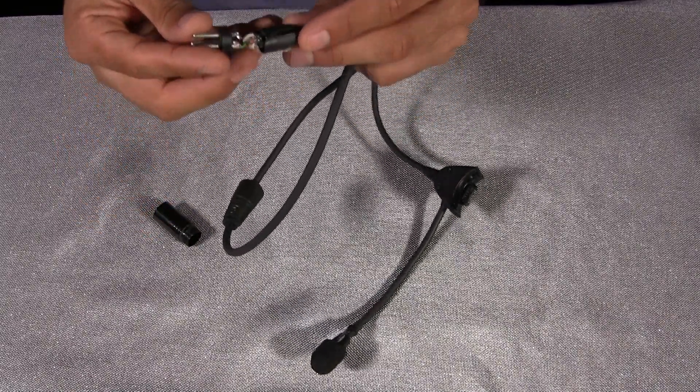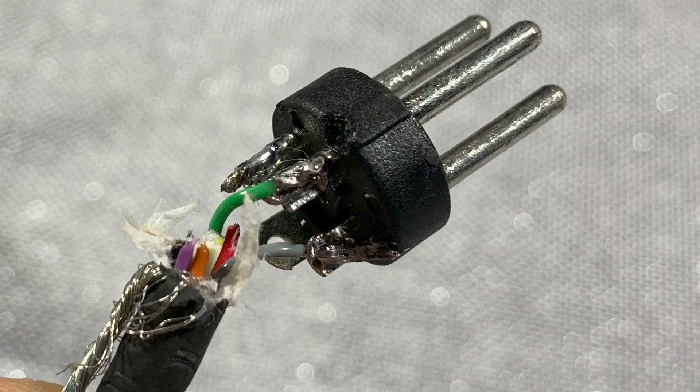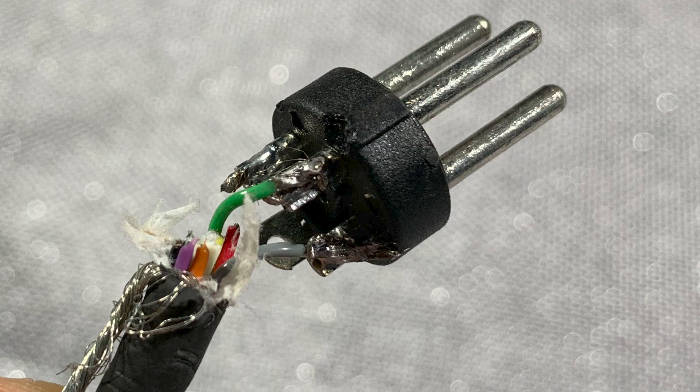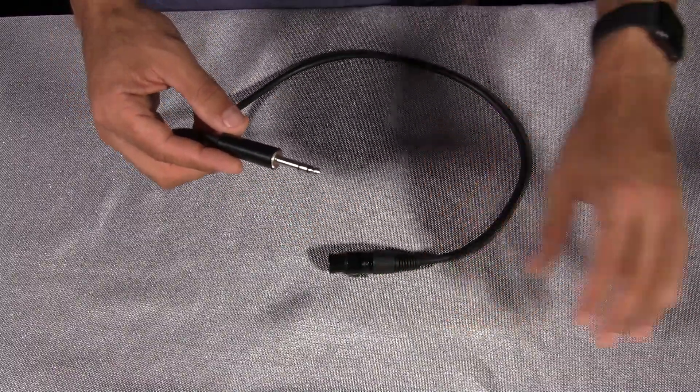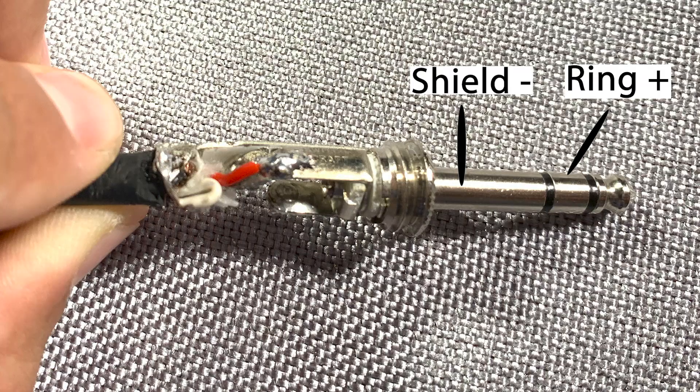The green and grey cables are the only ones that need to be connected. The grey plus and the green minus from the microphone. On the other side of the cable, we will attach the .206 connector. The plus wire is connected to the ring, and the minus wire is connected to the shield. The tip of the connector is unused.